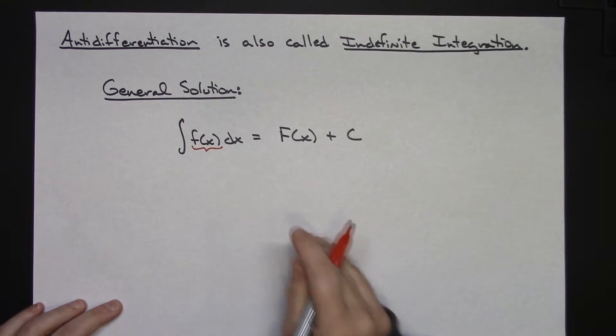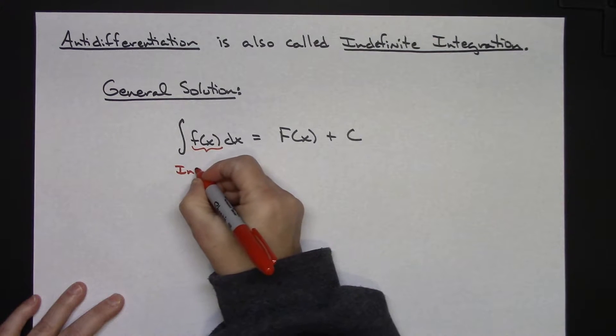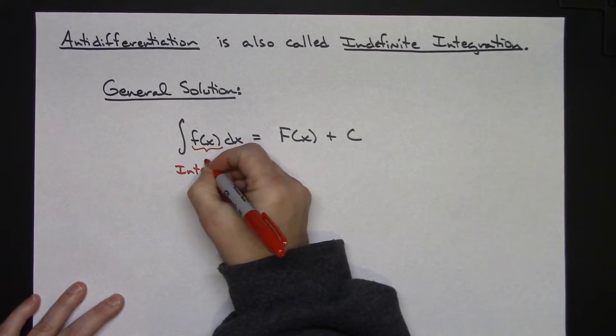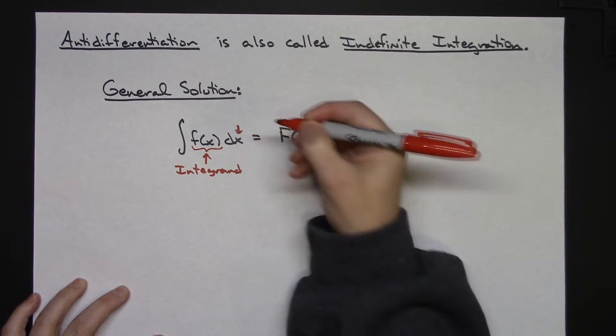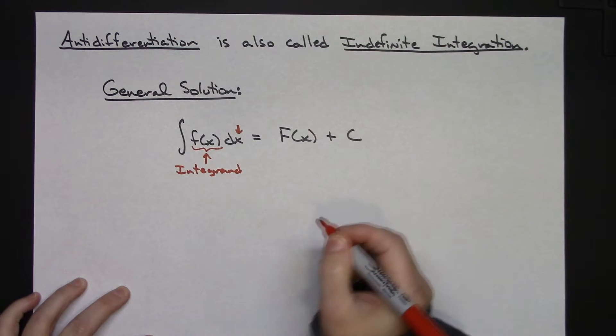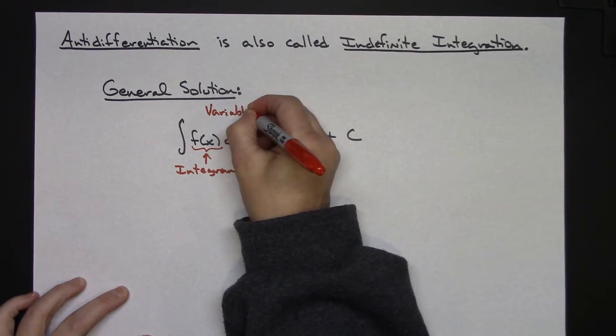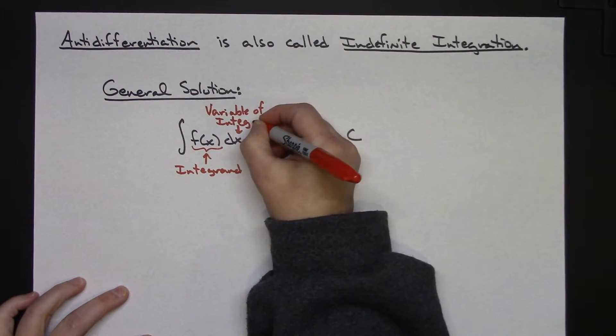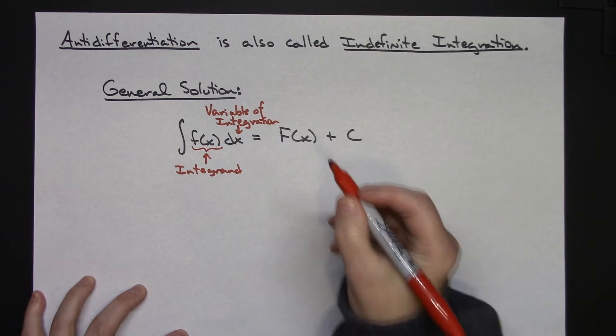Now I want to go through and define all of those things and tell us what we're looking at here. The function that you are integrating is called your integrand. The dx here, this x right here, tells me my variable of integration - variable of integration. Because functions can be written in terms of y, they can be written in terms of other letters, so I don't always have an x here.